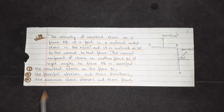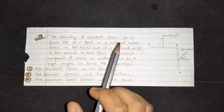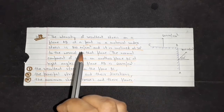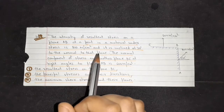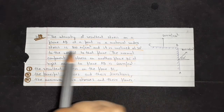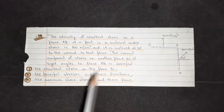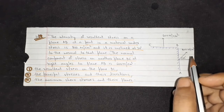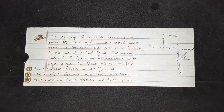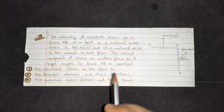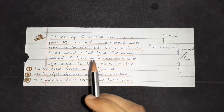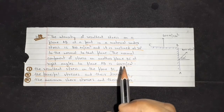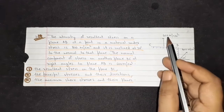Now let's come to our question. The intensity of resultant stress on plane AB at a point in a material under stress is 800 N per centimeter square, and it is inclined at 30 degrees to the normal to the plane. The normal component of stress on the other plane BC, at right angle to plane AB, is 600 N per centimeter square.